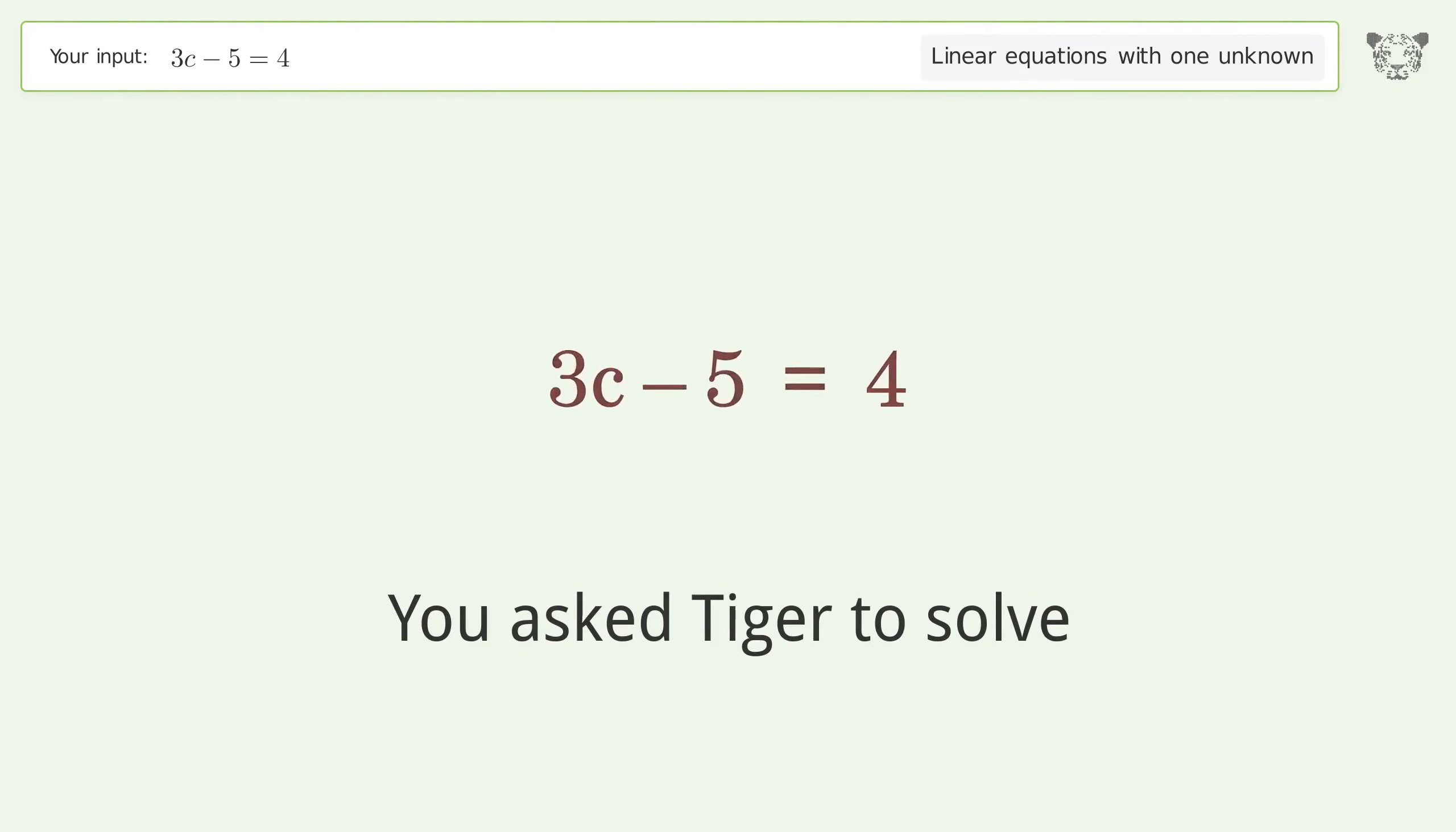You asked Tiger to solve. This deals with linear equations with one unknown. The final result is c equals 3. Let's solve it step by step.